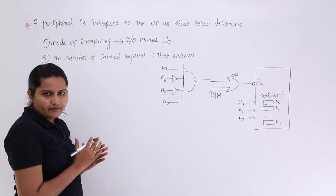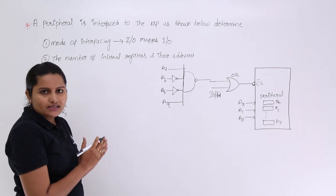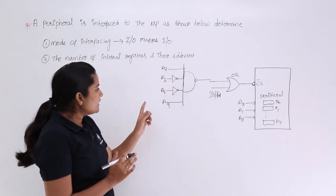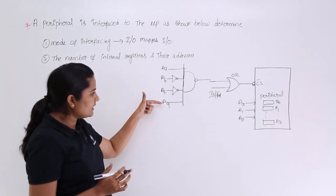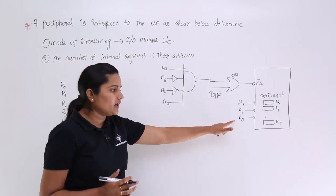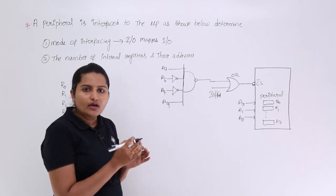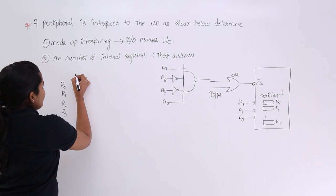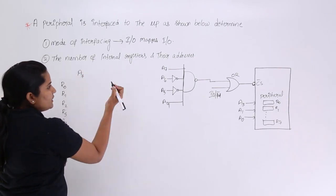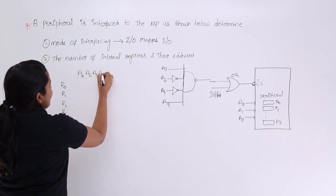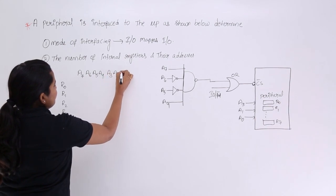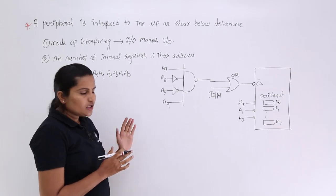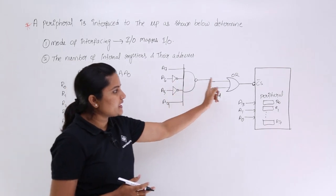Now we need to determine the addresses of the peripheral. The available address lines are A7 to A0, but A2 is not used here. We can observe A7, A6, A5, A4 and A3, A1, A0 are used, but A2 is not — making A2 a don't care. Writing the lower byte of address nibble-wise: A7 to A4 form the upper nibble of the lower byte, and A3, A2, A1, A0 form the lower nibble. The upper nibble A7–A4 is used for chip select, and the remaining 3 address lines address the registers.